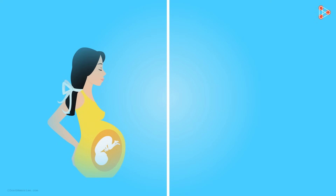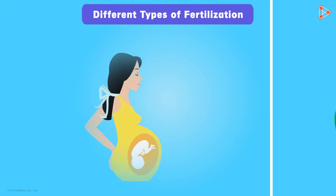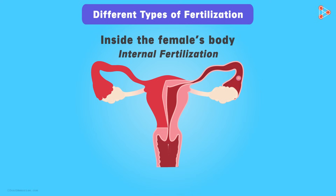For example, in humans, the baby grows inside the mother's body. This gets us to the concepts of types of fertilization. The first type is where fertilization occurs inside the female's body, hence referred to as internal fertilization. In this case, the sperms from a male's body enter the female's reproductive tract and reach the fallopian tubes where the egg cell awaits. The fusion of both completes the fertilization process inside her body. All higher animals like mammals exhibit this type of fertilization.